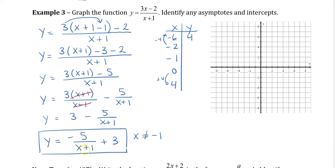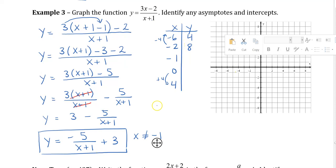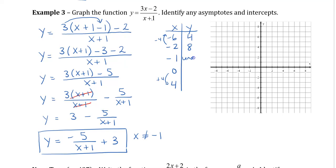When I plug in negative 2, I'm going to get 8. And negative 1, we already knew, doesn't work. So that's going to be undefined. When I plug in 0, I get negative 5 plus 3. So that's going to be negative 2. And then I plug in 4, I get negative 1 plus 3. And that gives me positive 2.